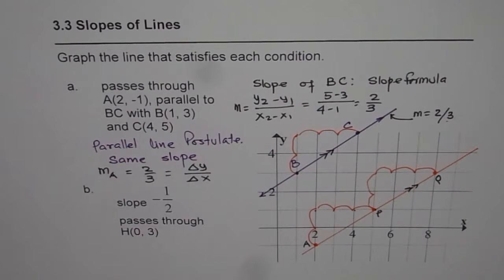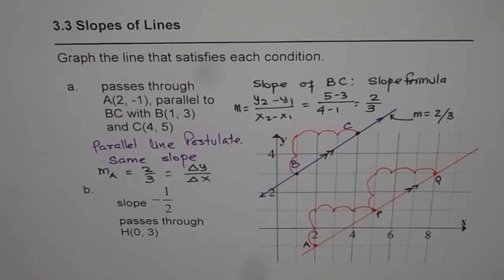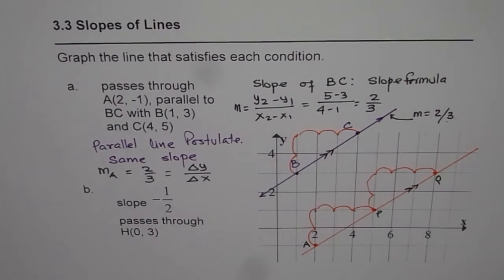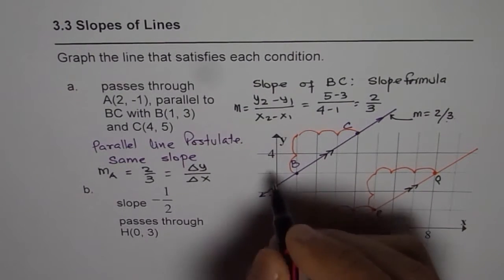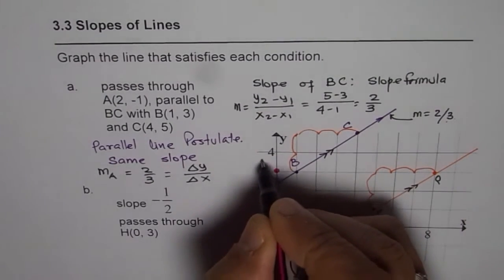That's how you draw parallel lines from a point. Now for part B, we are given slope -1/2 and it passes through (0, 3). This point is H for us.